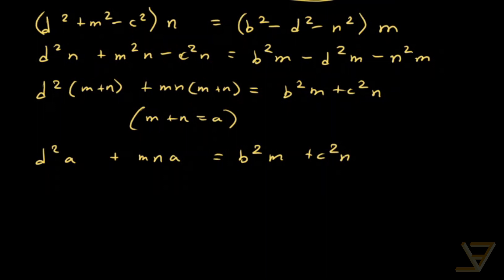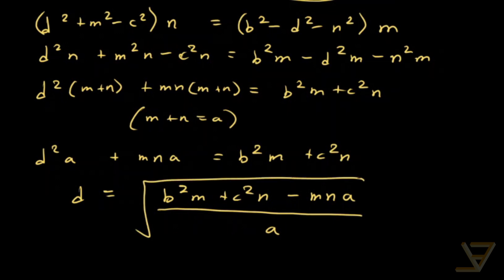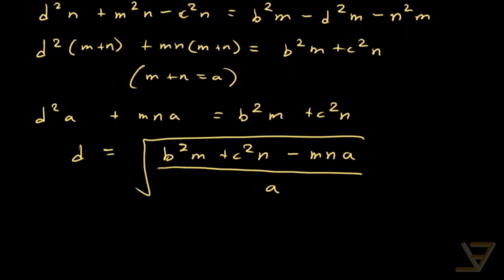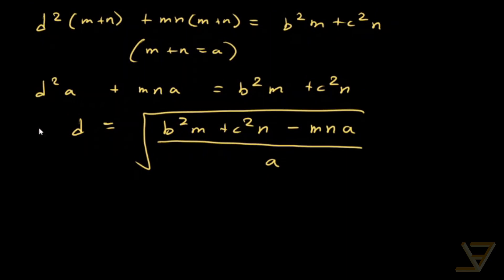At this point, you can see how to isolate d. So if we were to isolate d, we would get d is equal to the square root of b squared m plus c squared n minus mna divided by a. But that's harder to memorize. There's actually a mnemonic for remembering this.